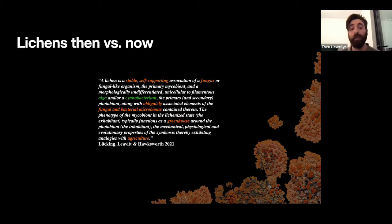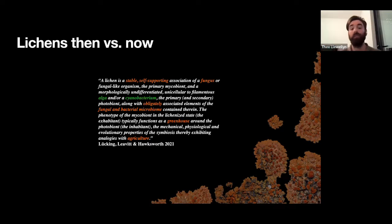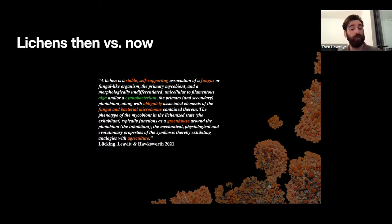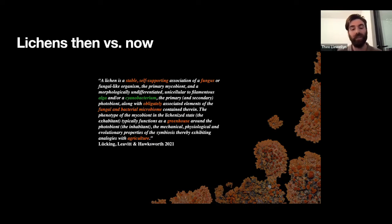The current definition is quite long, which represents just how complex it is to define a lichen. The key points are: it's a stable, self-supporting mutualism; there's a main fungus and algal symbiont — or cyanobacteria; it is obligate, especially for the fungus; it can also contain a microbiome of other organisms; and the fungus produces a structure analogous to a greenhouse. This can be compared to agriculture.